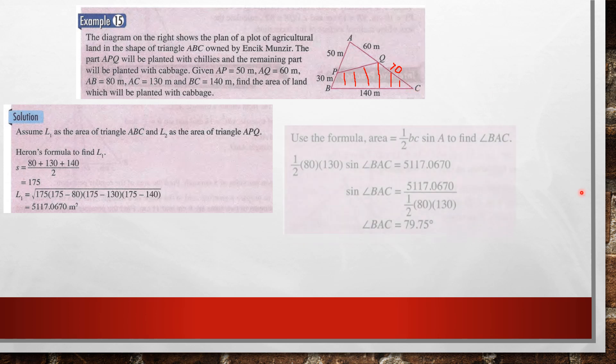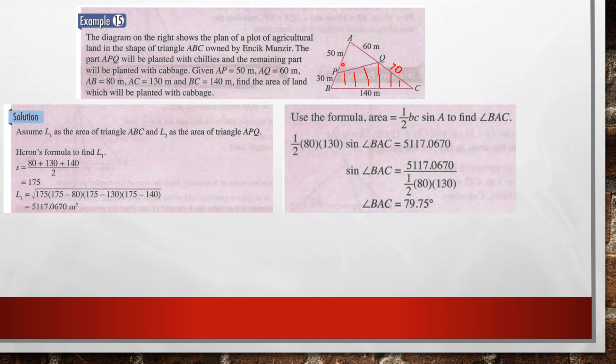Then you minus with the area of triangle APQ. So APQ, you want to find area of APQ. You don't know the length of PQ, but what you can do, you can find the angle BAC. So how to find the angle BAC?